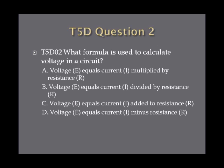Question 2: What formula is used to calculate voltage in a circuit? A. Voltage equals current multiplied by resistance. B. Voltage equals current divided by resistance. C. Voltage equals current added to resistance. Or D. Voltage equals current minus resistance.